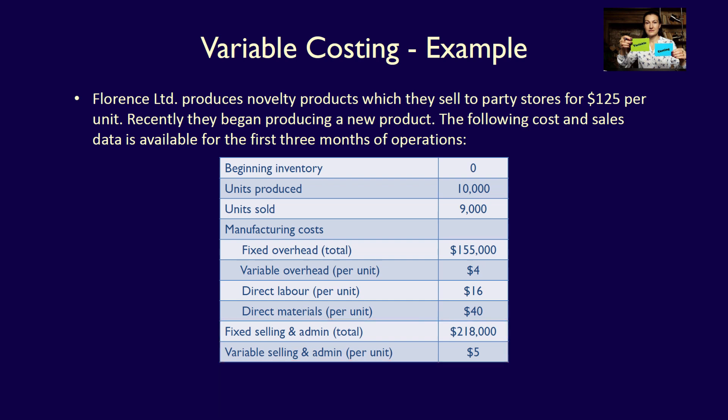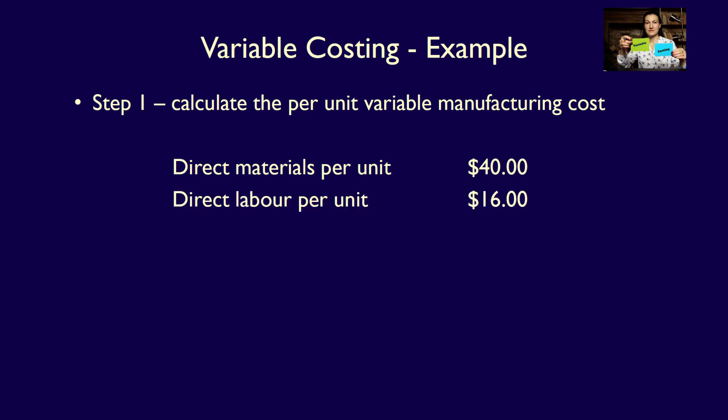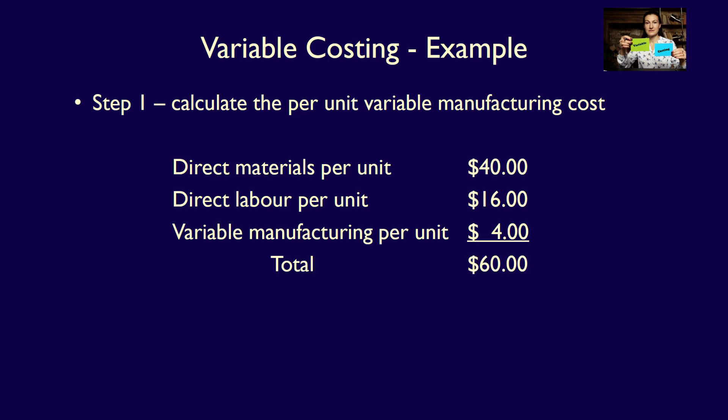Assuming the company uses variable costing, prepare a variable costing income statement for the first quarter. Under variable costing, step one is to calculate the per unit variable cost of the product. This includes direct materials per unit of $40, direct labor per unit of $16, and variable overhead per unit of $4, for a total variable cost per unit of $60 each. This is the total per unit variable cost we'll use to determine the variable cost of goods sold and the value of ending inventory.